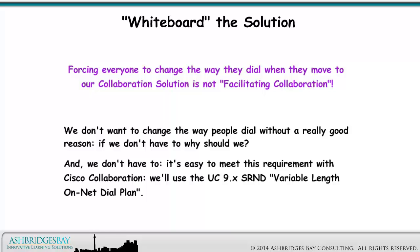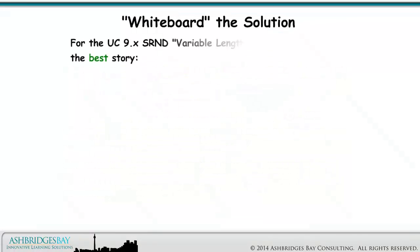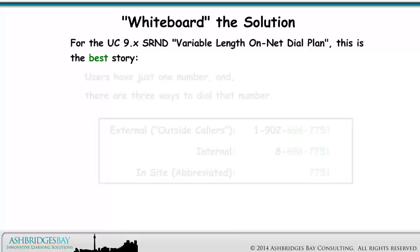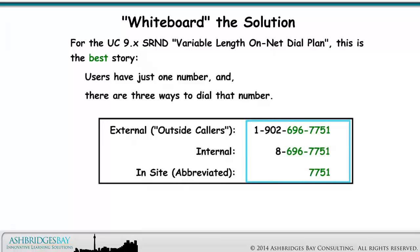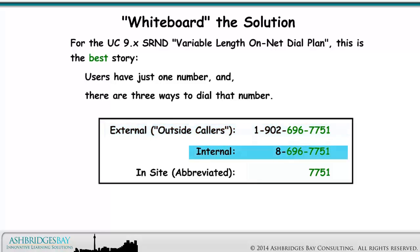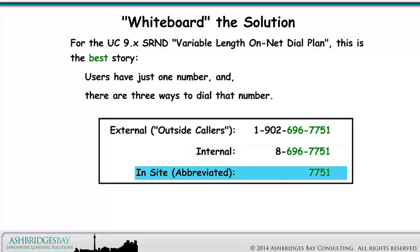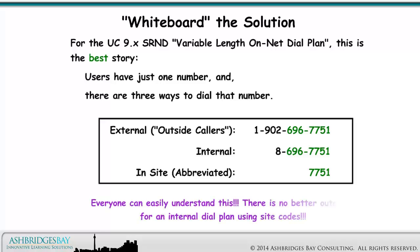We'll use the UC9.x SRND variable length on-net dial plan. For the UC9.x SRND variable length on-net dial plan, this is the best story. Users have just one number, and there are three ways to dial that number. External, outside callers dial the whole number. Internal callers dial using 8 instead of the area code. Within the same site, just dial the extension. Outside callers will know whether the 1 is required or not, so we don't need to worry about that. Everyone can easily understand this — there is no better outcome for an internal dial plan using site codes.